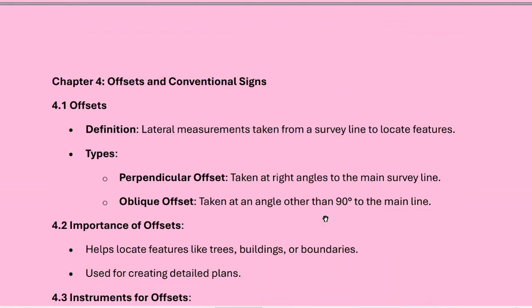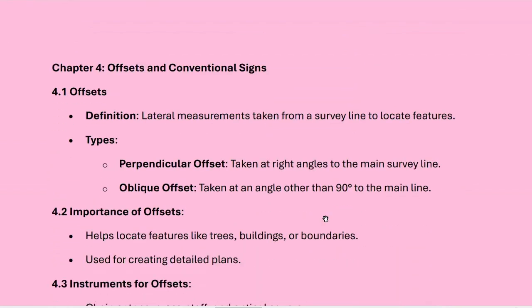What is the definition of an offset? An offset is a lateral measurement taken from a survey line to locate features. Basically, offsets are of two types: perpendicular offsets and oblique offsets. When taken at right angles to the main survey line, it is called a perpendicular offset. When taken at an angle other than 90 degrees to the main line, it is called an oblique offset.